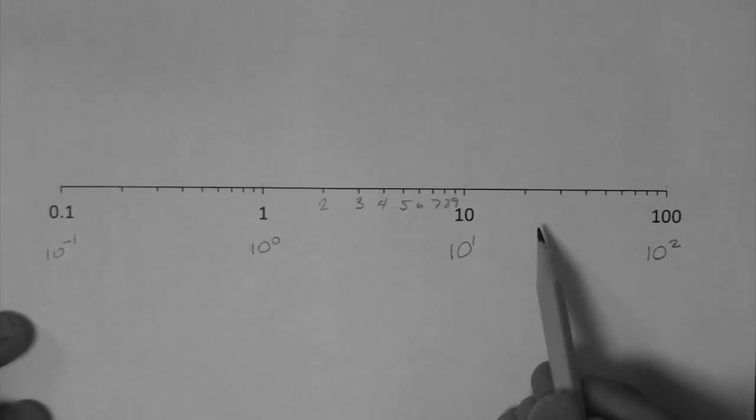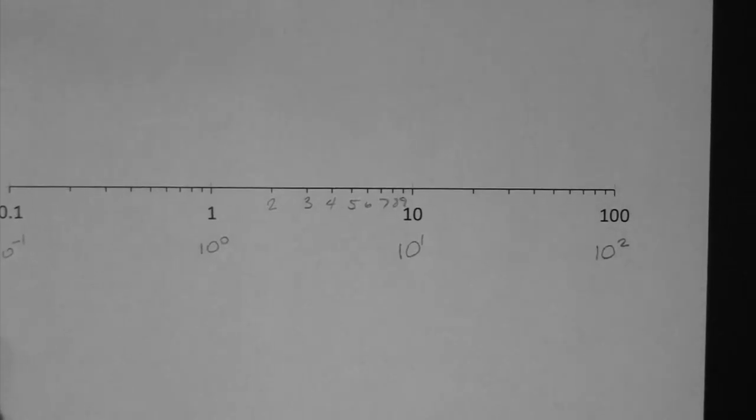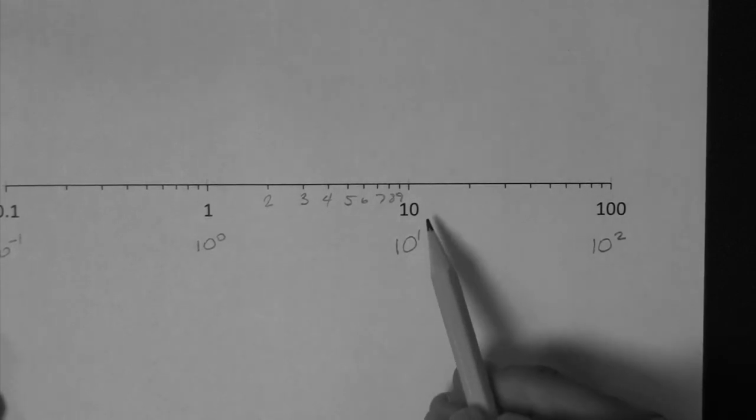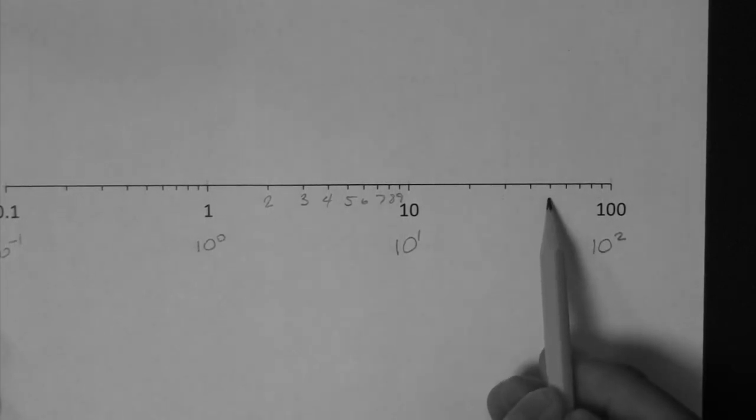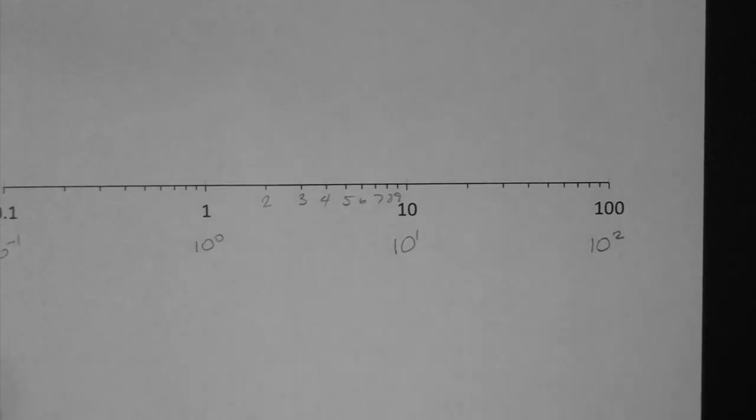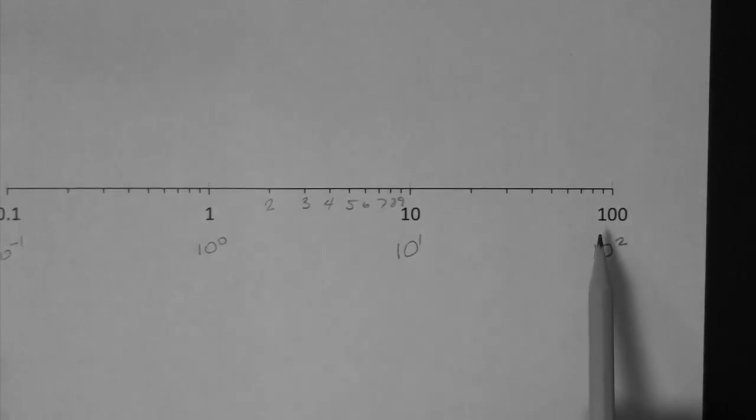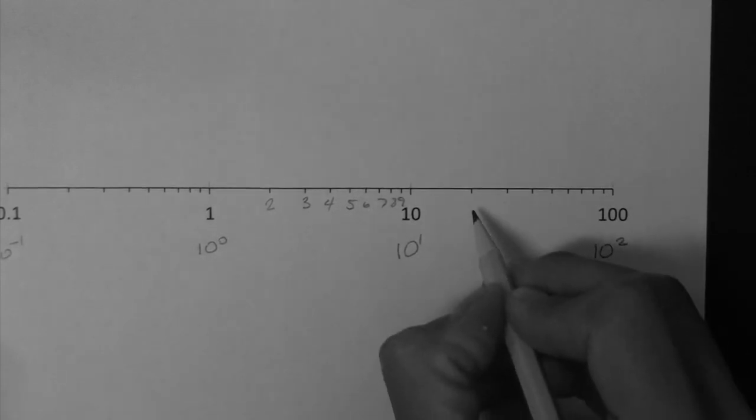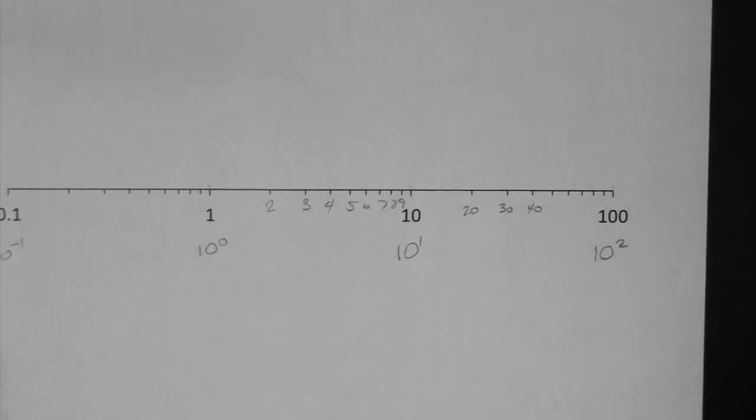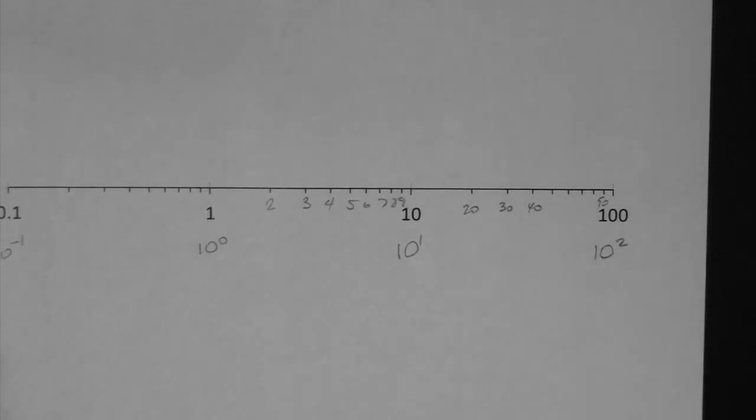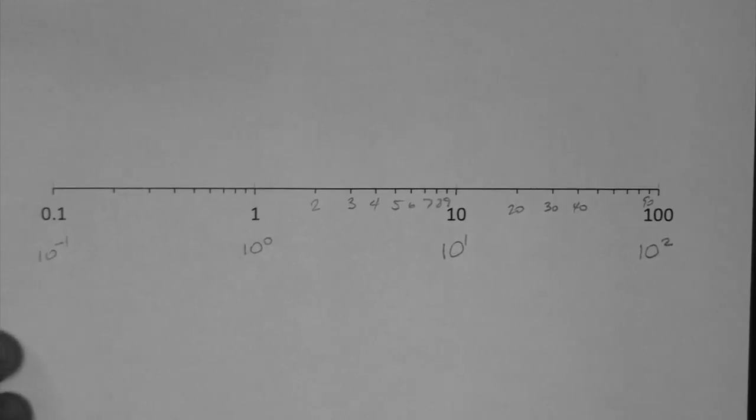Now if we move to the right here, I've seen students, for example, right here say 11, 12, 13, 14. No, that's not right. Here we have to go by 10s. So this is 20, 30, 40, etc. This one over here is 90. I hope that you can see that on the screen.